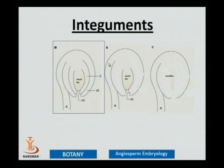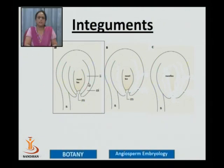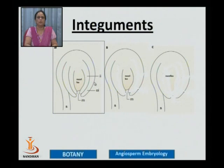There are a large number of plants which show variation in the number of integuments. In this figure, there are two integuments — the outer and inner — which is the most common condition. You can see this type of ovule in most monocots and also members of family Polypetalae where the nucellus is always surrounded by two integuments. Such a condition is known as a bitegmic ovule.